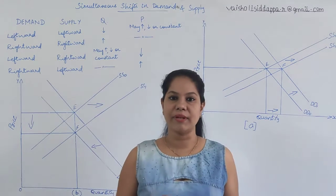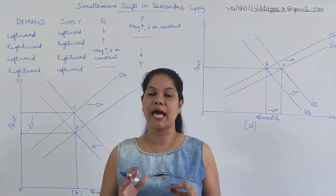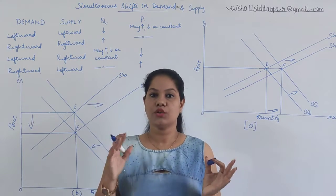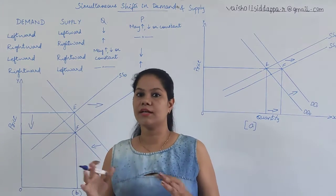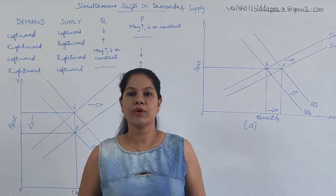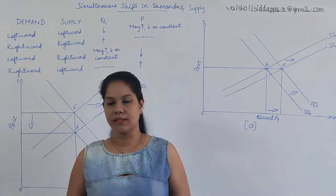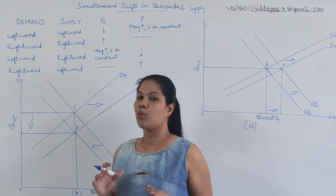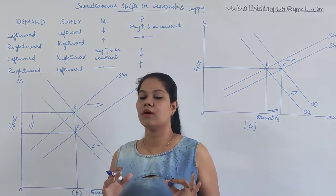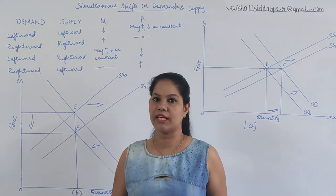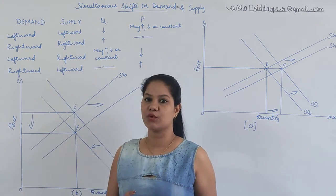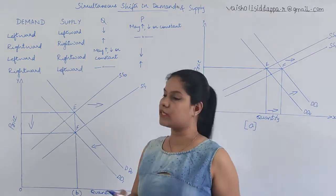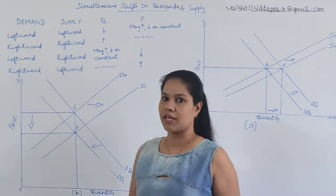Today, demand and supply are both going to shift simultaneously — towards right, left, together, or in opposite directions. When they are moving together or in opposite directions, what kind of change are we going to see in price and quantity? We are going to see that with the help of diagrams and this particular table.